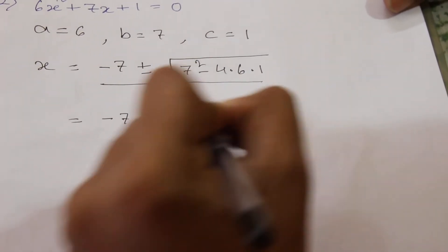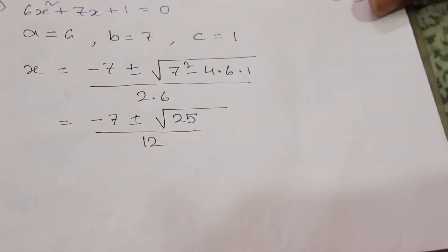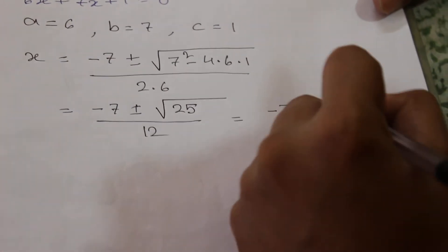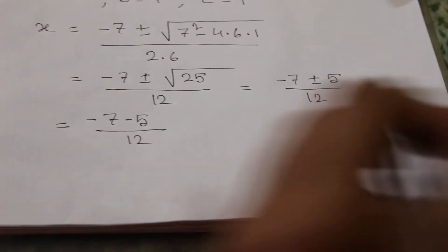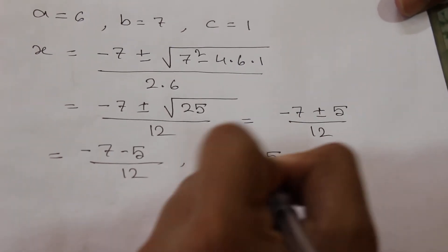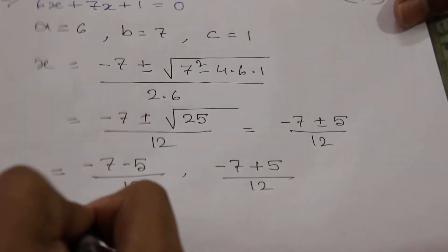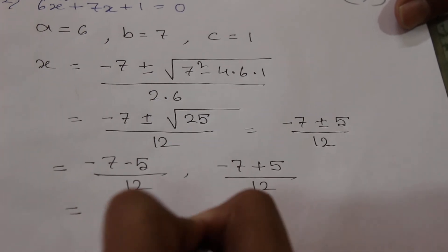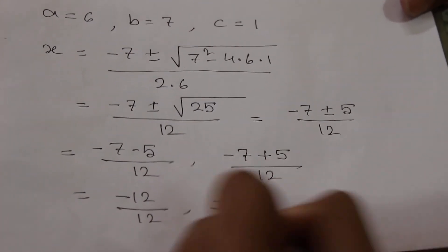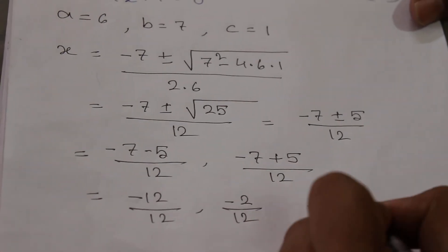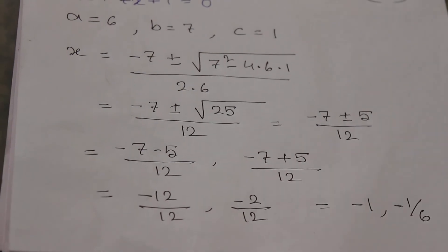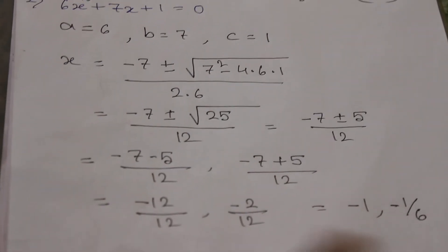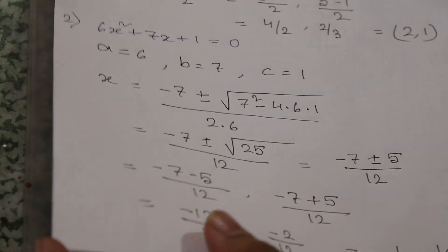This simplifies to (−7 ± √25) / 12, so (−7 ± 5) / 12. One root will be equal to (−7−5)/12 = −12/12 = −1, and another root will be equal to (−7+5)/12 = −2/12 = −1/6. Understood. Moving on to our next example, which is the last one.